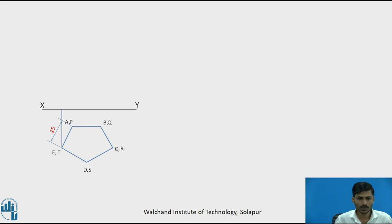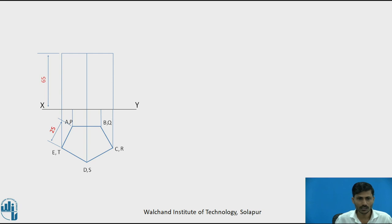Next, we need to draw the projections to construct the front view. The vertical edge AT has a length of 65 mm, equal to the axis length. Next, the line CR is drawn. Then draw the top surface P, Q, R, S, T and connect the DS vertical edge. The AP and BQ vertical edges are drawn with dotted lines because they cannot be seen from the front view. Name the bottom surface A, B, C, D, E and the top surface P, Q, R, S, T.